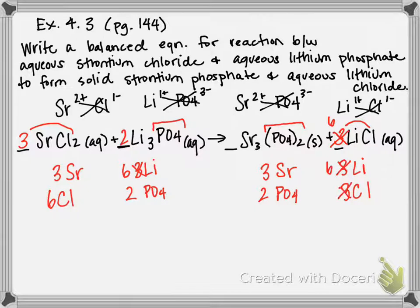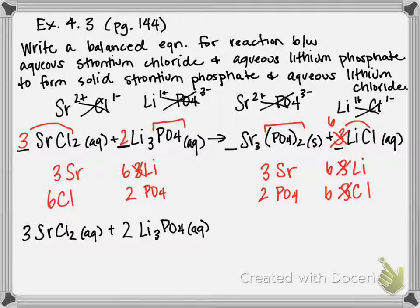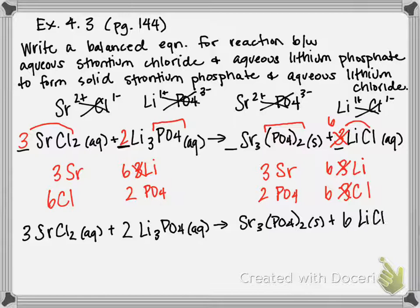So my balanced equation is going to be 3 SrCl2 plus 2 Li3PO4 produces Sr3(PO4)2. That does not have a coefficient out in front, meaning it's just there's one molecule present plus 6 LiCl aqueous.